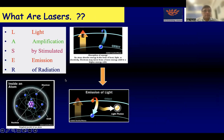The LASER acronym stands for Light Amplification by Stimulated Emission of Radiation. How is it produced? You have electrons in different orbitals. When one electron moves from a lower orbital to a higher orbital, where it is not stable, and comes back to the lower orbital, it releases energy in the form of a photon.